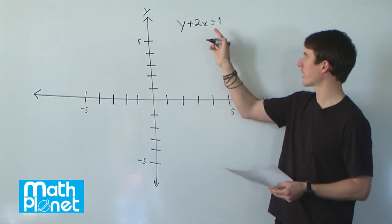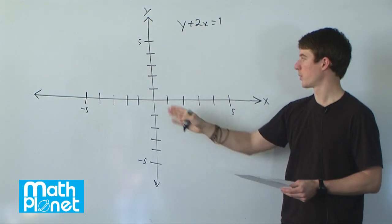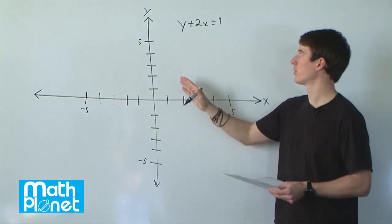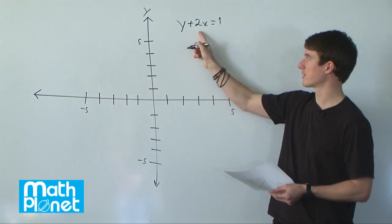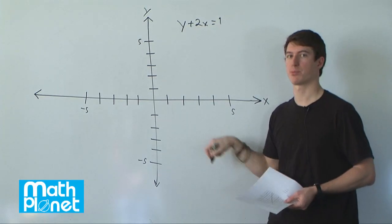We can always take any values of x or y, we can just pick 0 for example and find what the value of y is going to be, or we can rewrite this in slope intercept form and then just plot it directly.